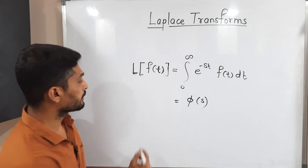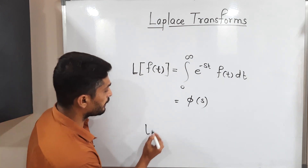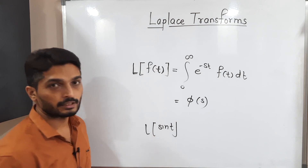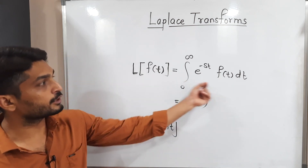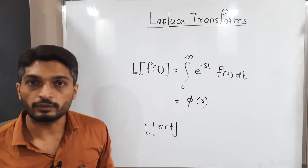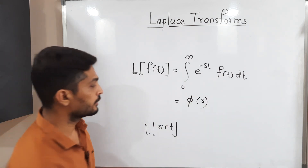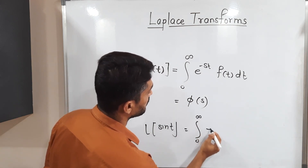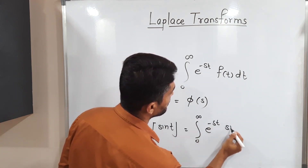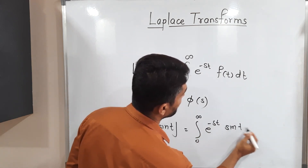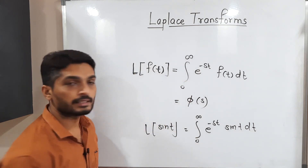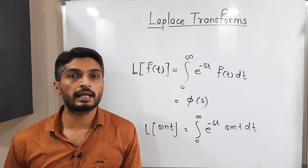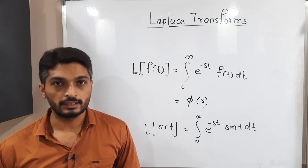For example, suppose we have to find the Laplace transform of sin(t). Our function is sin(t), so in the definition at the place of f(t) we put sin(t). This equals the integration from 0 to infinity of e raised to minus st times sin(t) dt. By solving this integration, we get some function of s, which is the Laplace transform of sin(t).